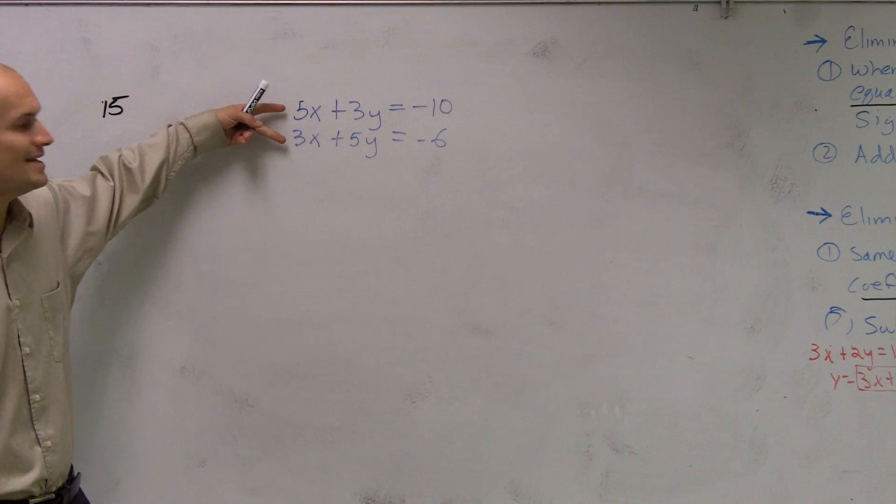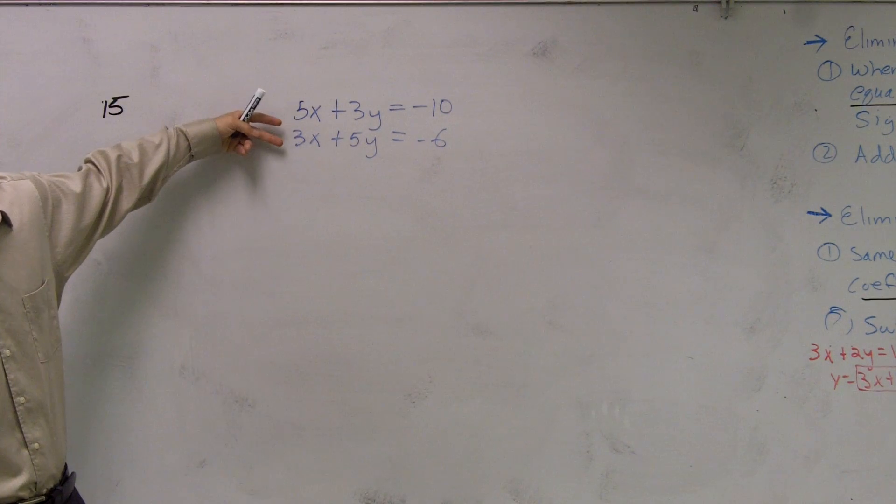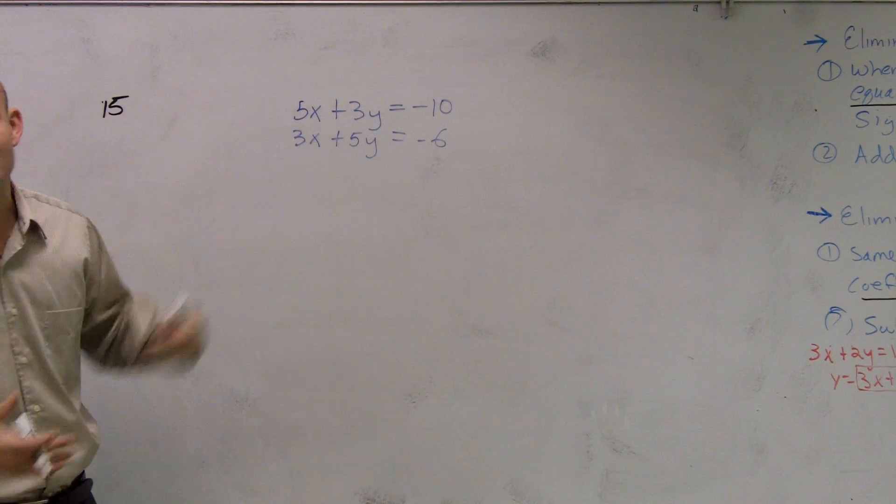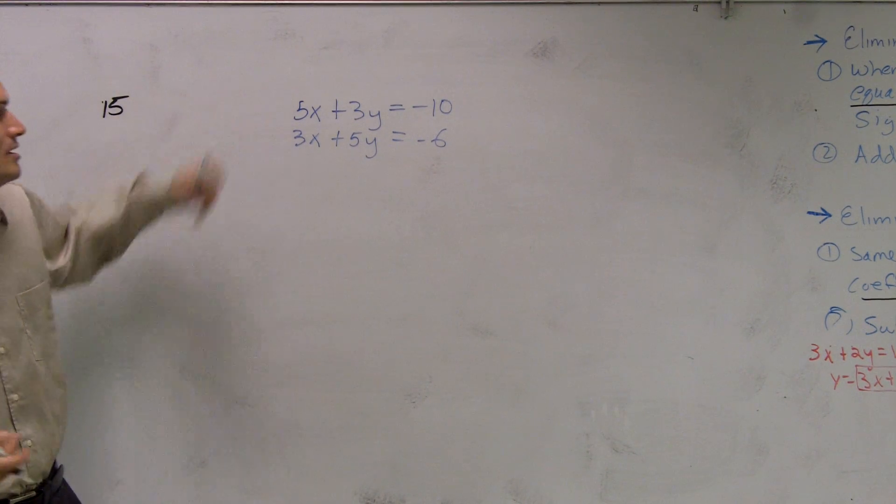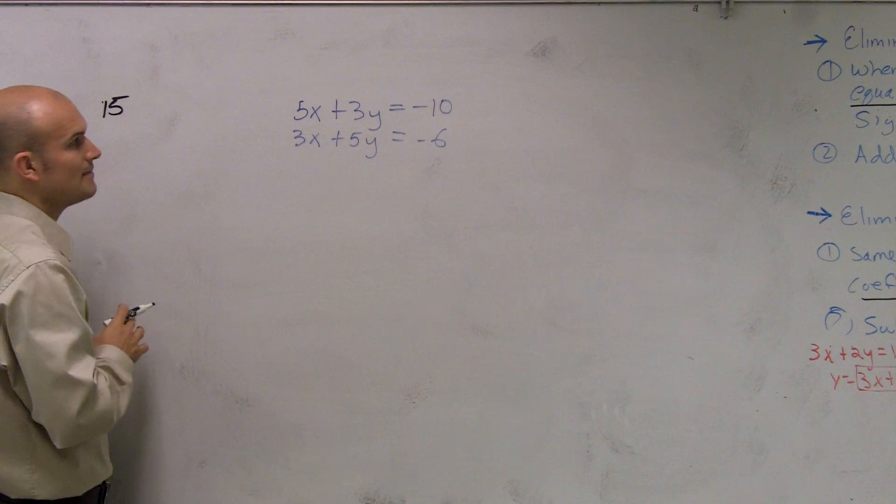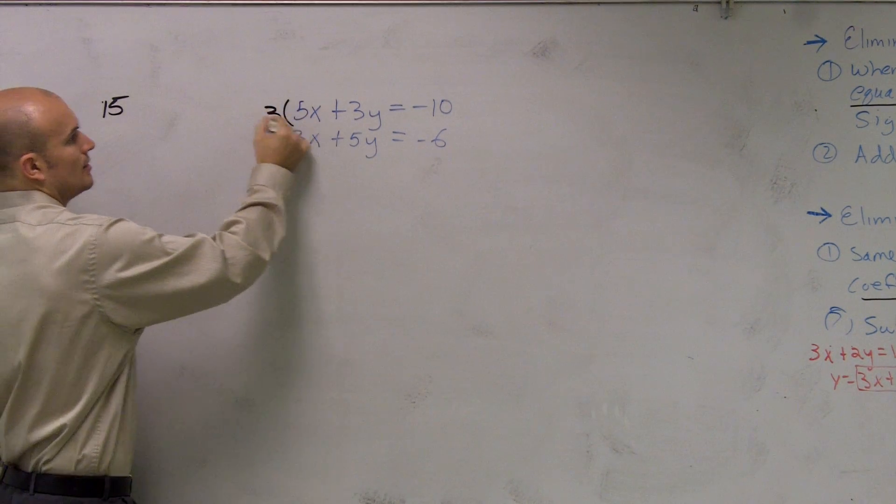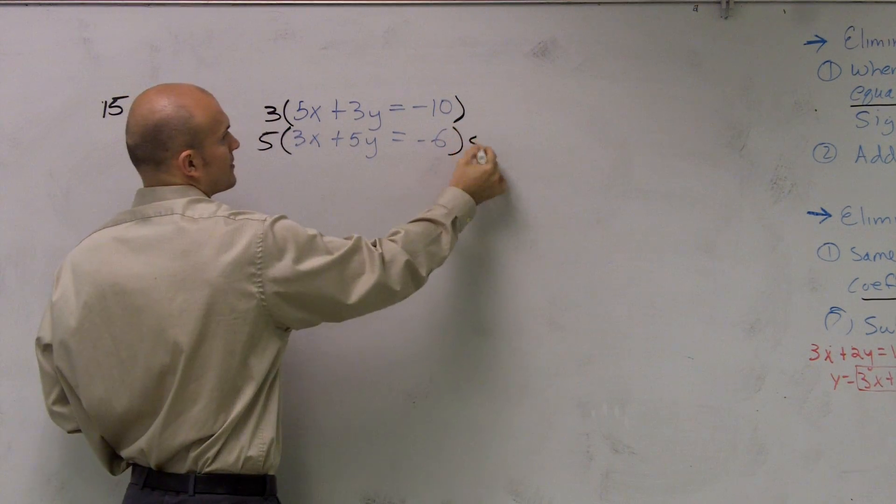So what I need to do is, I need to get either my 5 to 15 or my 3 to my 15 for the x's or for the y's. For this problem, I'm going to get my x's to be the same number. So what I'll do is, I'll multiply my top equation by 3, and I'll multiply my bottom equation by 5.